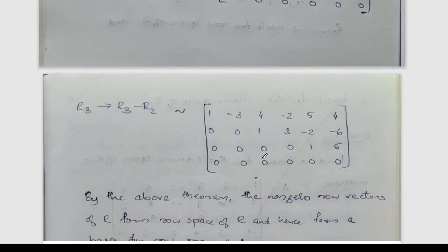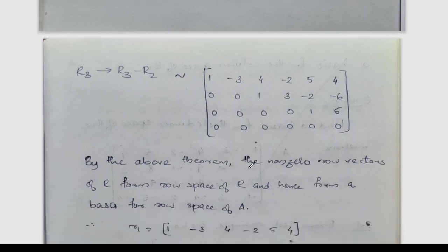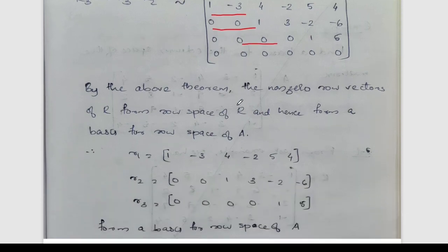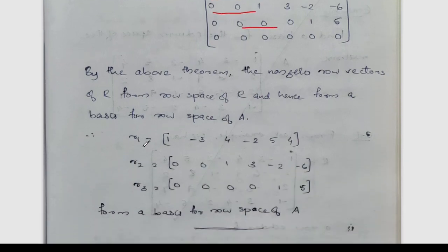The leading entry is 1 in each non-zero row. The non-zero row vectors of R form the row space of R. We use the first row R1 = (1, -3, 4, -2, 5, 4), second row R2 = (0, 0, 1, 3, -2, -6), and third row R3 = (0, 0, 0, 0, 1, 5). These three vectors form a basis for the row space of A.